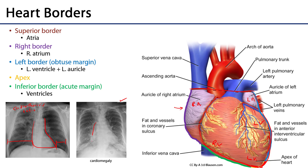On the other radiograph, the pericardium takes up more than 50% of the total distance between the rib cage. This cardiothoracic ratio greater than 50% is an example of a condition known as cardiomegaly, which is an enlargement of the heart.